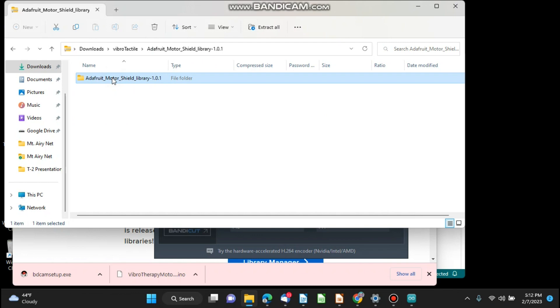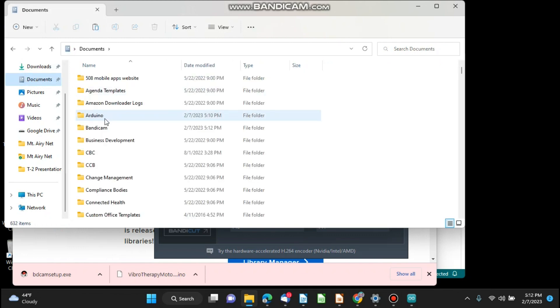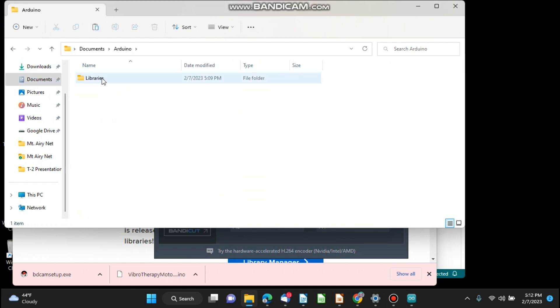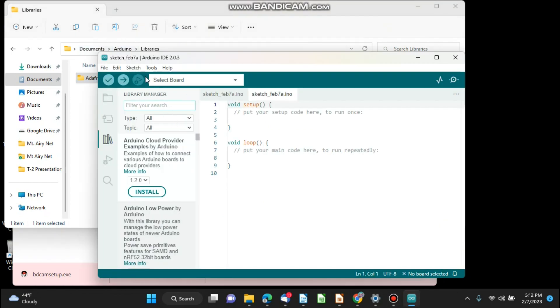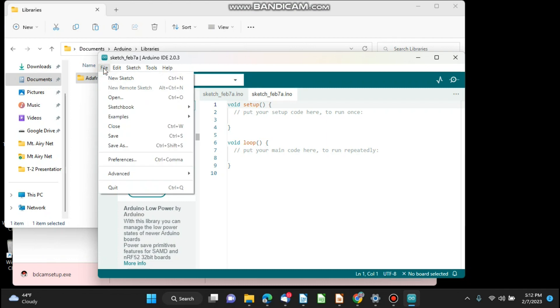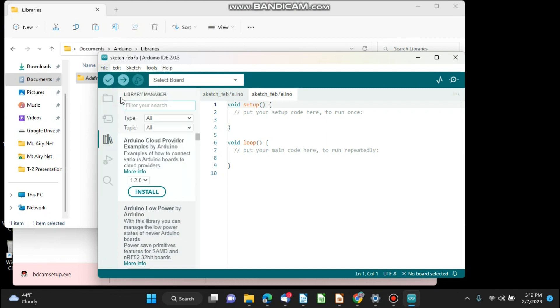I'm going to take this Adafruit Motor Shield library that was in the zip. I am going to put it in Arduino. I'm going to put it in that libraries directory that I created and I'm going to paste it there.